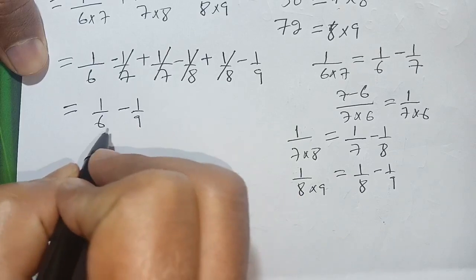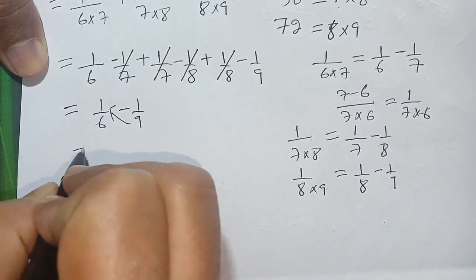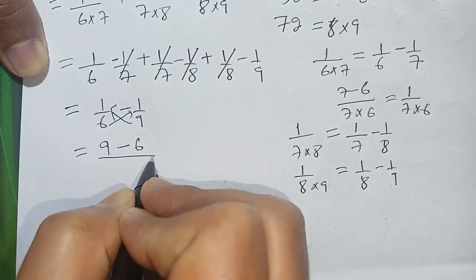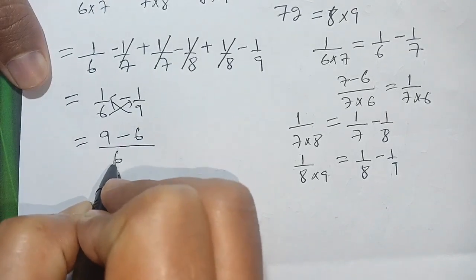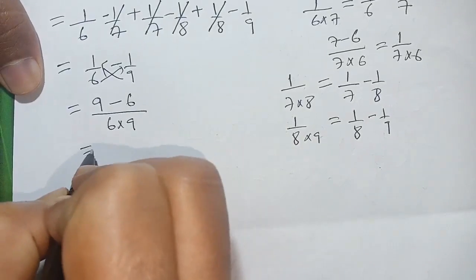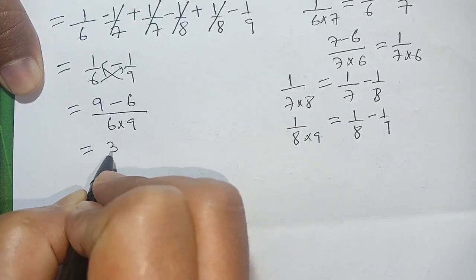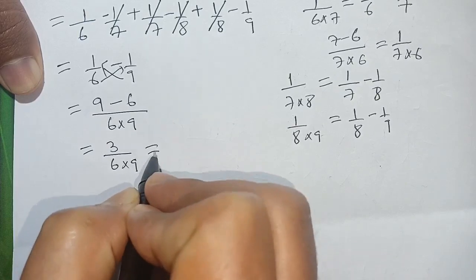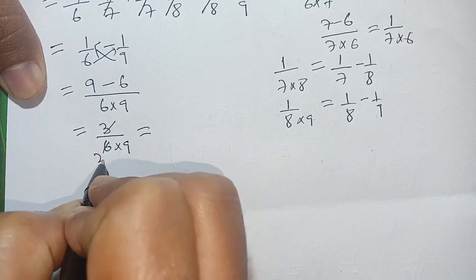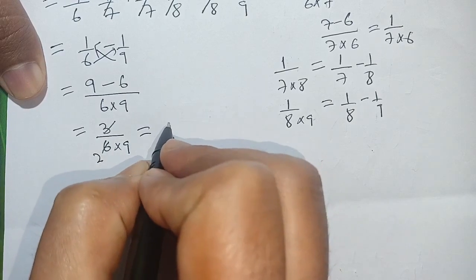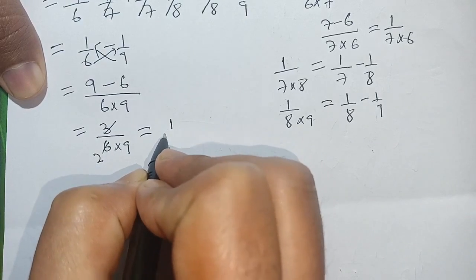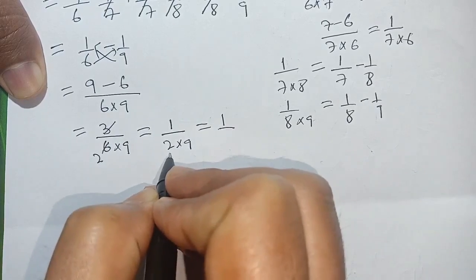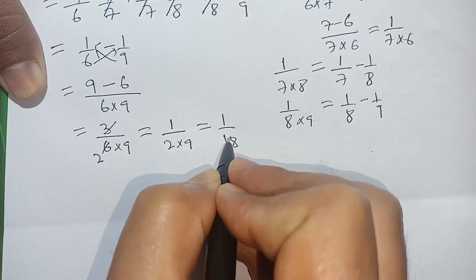Now we cross multiply: 9 times 1 becomes 9, minus 6 times 1 becomes 6, divided by 6 times 9. In the next step, 9 minus 6 becomes 3 divided by 6 times 9. Then 3 and 6 simplify — 6 divided by 3 becomes 2 — so the remaining terms give us 1 divided by 2 times 9.